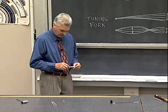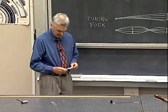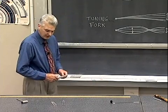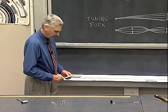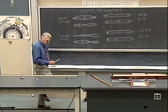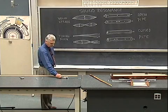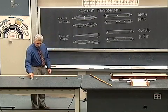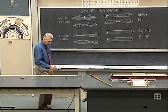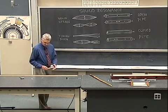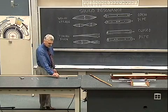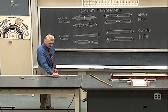Here's a tuning fork that's one octave above middle C. This has a frequency of 1024 cycles per second, or twice the frequency of 512. High pitch, medium pitch, lower pitch, and with a higher harmonic.